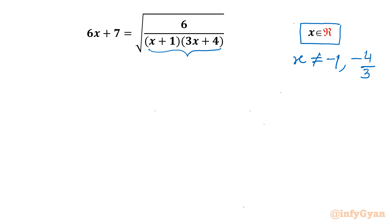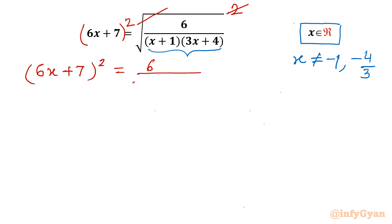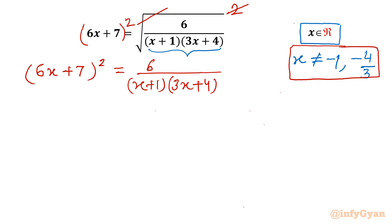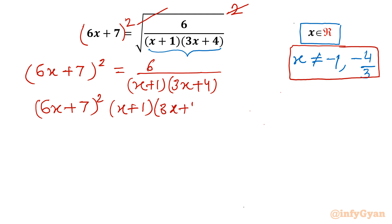Now I will consider squaring both sides. Square root and power 2 will cancel. Left hand side: (6x plus 7) squared. Right hand side: 6 over (x plus 1)(3x plus 4). Since x cannot equal minus 1 and minus 4 over 3, I can cross multiply to get (6x plus 7)² times (x plus 1)(3x plus 4) equals 6.